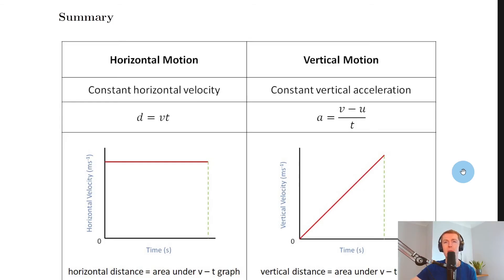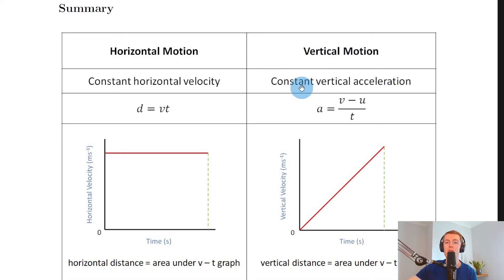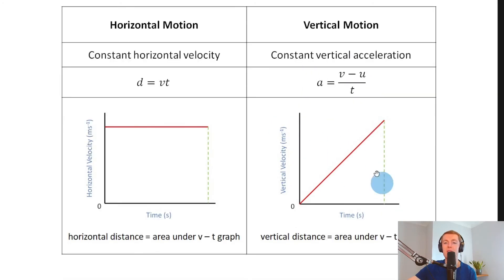To summarize: for horizontal motion, the object travels with constant horizontal velocity, and we use d equals vt for calculations. The velocity-time graph shows a straight horizontal line, and the area under it gives horizontal distance. For vertical motion, the object travels with constant vertical acceleration, and we use a equals v minus u over t. The velocity-time graph shows a positively sloping line, and the area under it gives the vertical distance travelled.